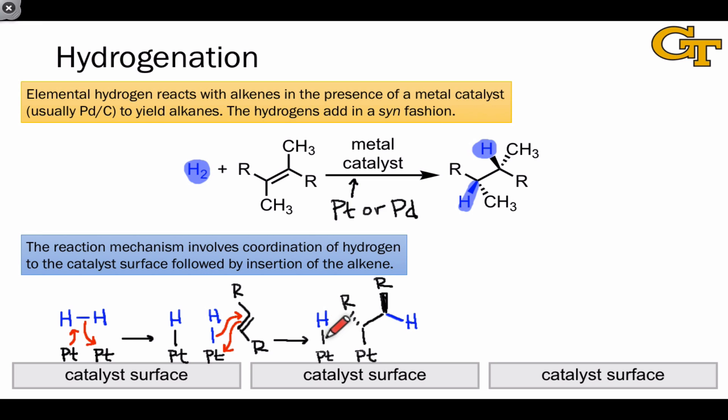In the final step of the reaction mechanism, elimination occurs to regenerate the catalyst. This involves coordination of hydrogen to the alkene carbon connected to platinum. This establishes the second carbon-hydrogen bond and donation of a pair of electrons back to the platinum. The platinum catalyst is thus regenerated, and the alkane product is released.